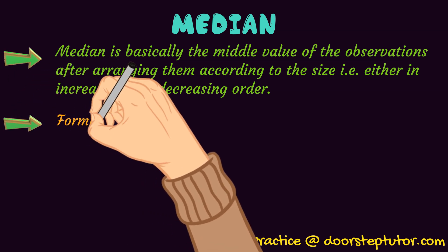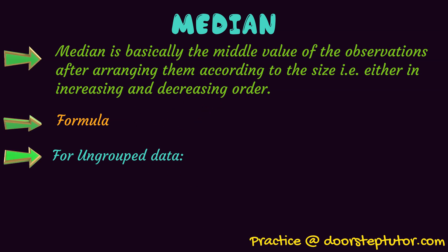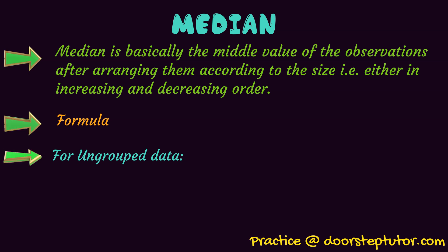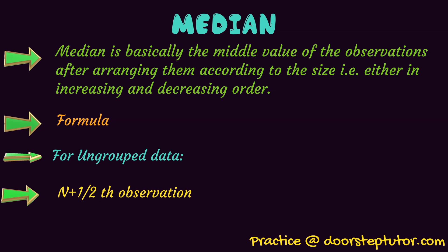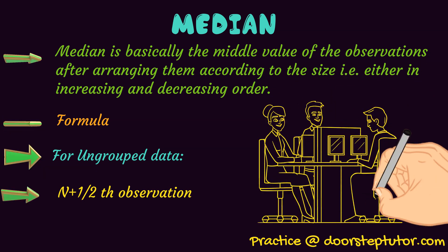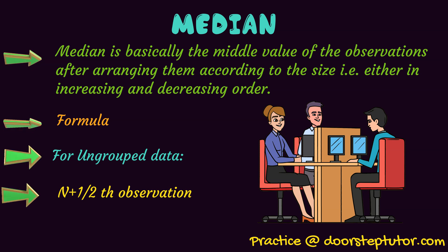Now what is the formula? For ungrouped data, that is data which is not in groups — for example, 50 students are getting 60 marks and 10 students are getting 70 marks — the formula is (n+1)/2th observation, where n is the number of observations. So we will get a value, say 5, meaning the 5th observation will be the middle value and that would be our median.